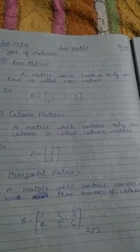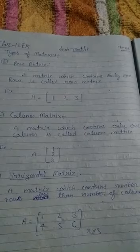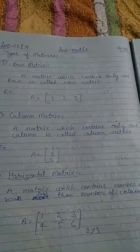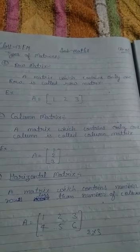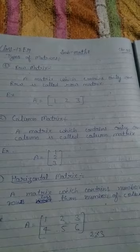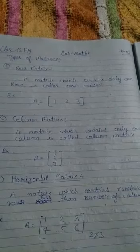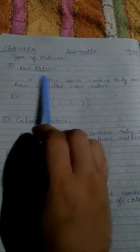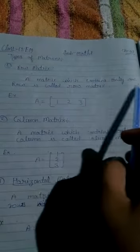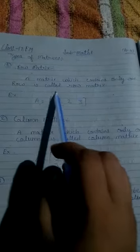Hello students, I'm Ajay Kumar. I will teach you Class 12 English medium Maths, Chapter 3: Matrices. Today we will discuss types of matrices. So let us see first, row matrix. A matrix which contains only one row is called a row matrix.